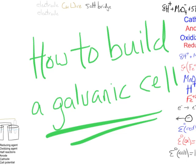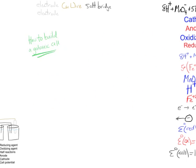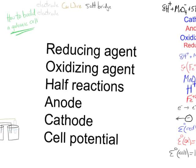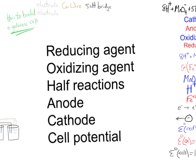Let's take a look at how to build a galvanic cell. First, we're going to have some terminology, and we've seen some of these terms before. We're going to talk about a reducing agent. Remember the terminology. If you're a reducing agent, then you yourself have been oxidized. We'll have an oxidizing agent, which means that'll be something that's going to take electrons from another species, so it itself gets reduced. We'll have half reactions.